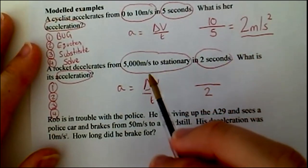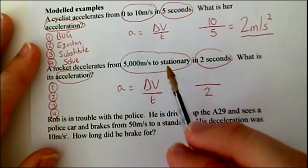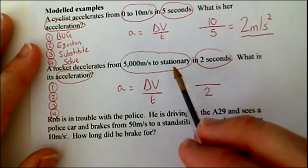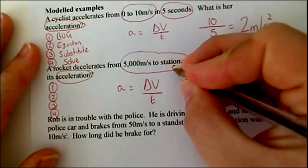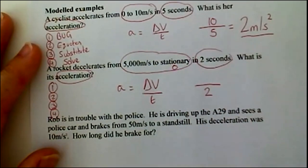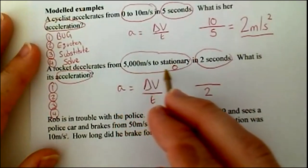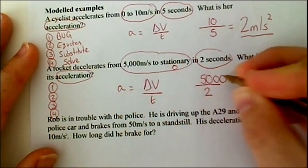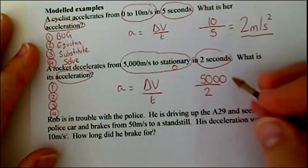Change in velocity. It's gone from five thousand to stationary. Now, stationary, that means they're stopped. That means they're not moving. They've got no velocity. So, therefore, they've gone from five thousand to zero. So, the change is five thousand. Five thousand in two seconds.